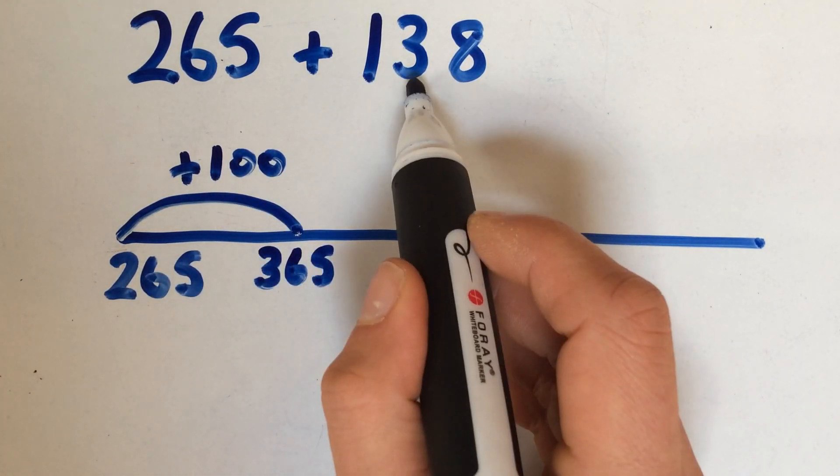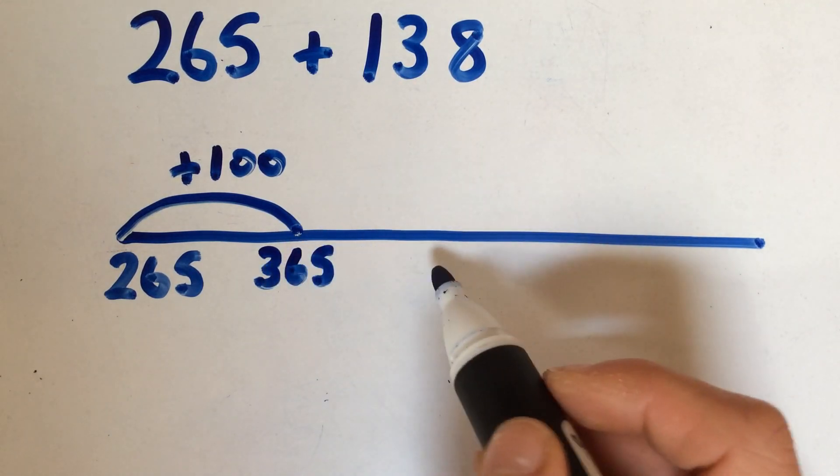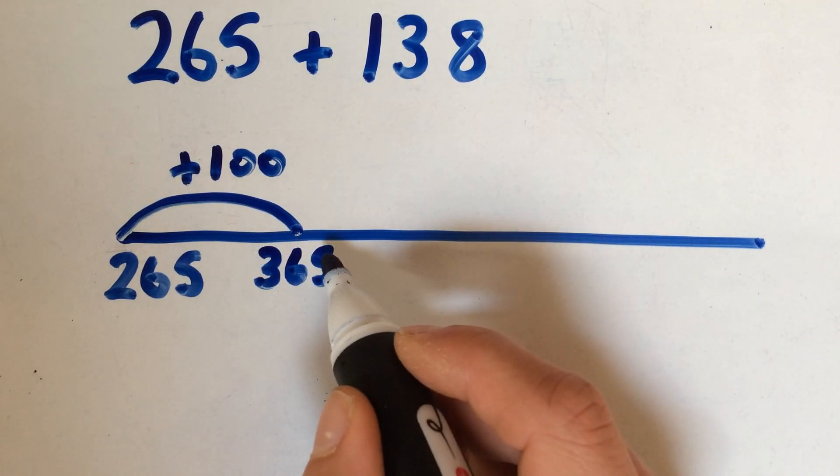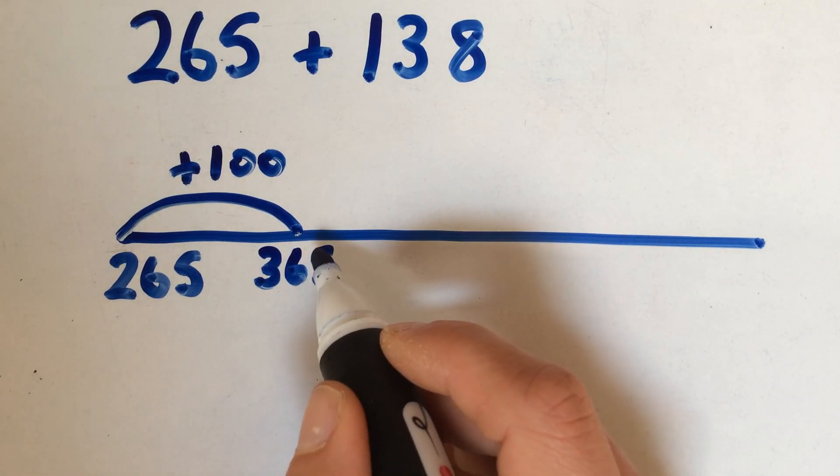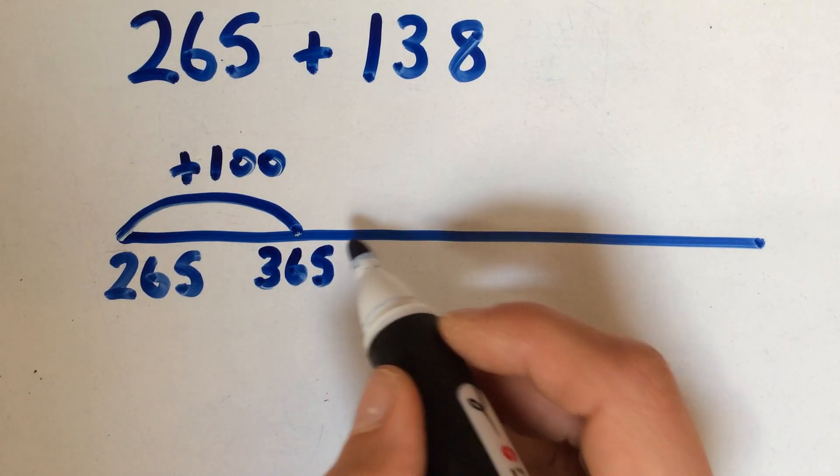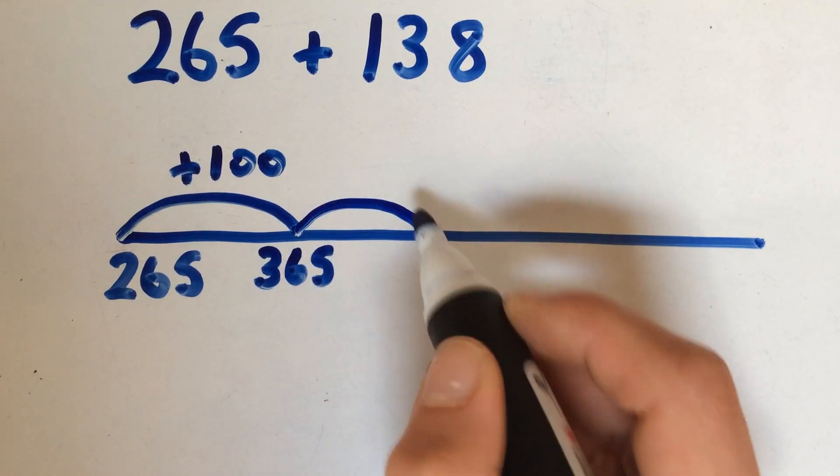So the 100 has been dealt with. You could then add the 30 all at once, or it could be added as 3 lots of 10, or as a 20 and a 10. It depends what the child is comfortable with.